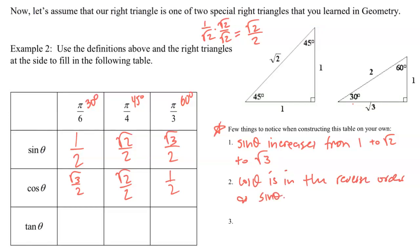If you can memorize sine theta, you know cosine theta because it just goes in the opposite direction. Instead of one, two, three like sine theta, cosine goes three, two, one — meaning the values are square root of three over two, square root of two over two, and one half.